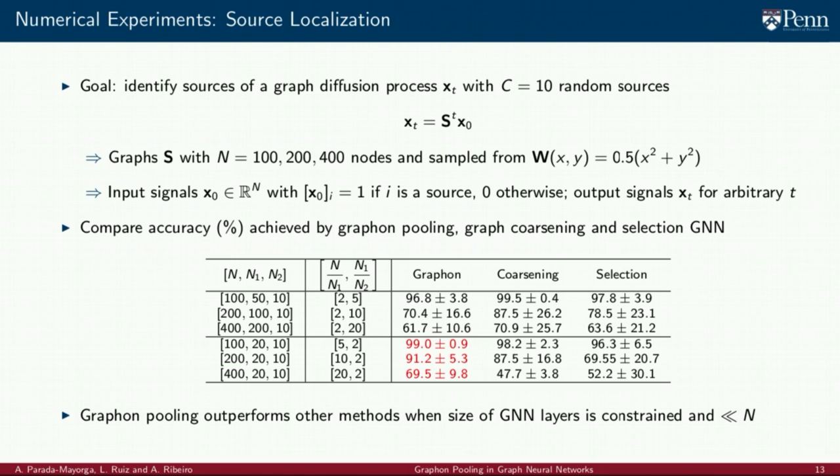From the table on the slide, we conclude that graphon pooling does not improve upon the other pooling strategies when the dimensionality reduction ratio of the first layer N divided by N sub 1 is small. On the other hand, it largely outperforms the other methods when this ratio is large, indicating that graphon pooling is well suited for GNNs where the size N sub l of each layer l needs to be bounded due to time or memory constraints.